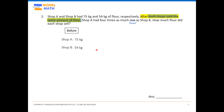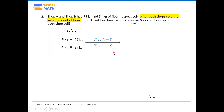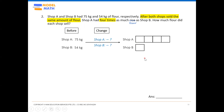Draw an arrow to show the change. Both shops sell the same amount of flour, so the flour decreases — it's a minus situation — but we don't know how much they sell, so mark it with a question mark for both shops. This is the 'change' portion. For the 'after' portion, Shop A had four times as much as Shop B, so draw a simple model: A has four units, B has one unit.